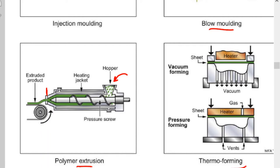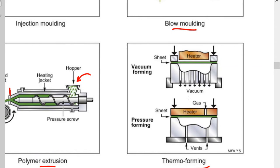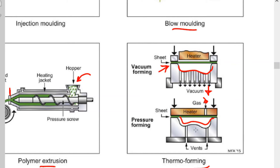In thermoforming, we have two subtypes: vacuum forming and pressure forming. In vacuum forming, we have a polymer sheet. When it is heated and sucked from below, a vacuum is created and the sheet takes the shape of the inner surface of the mold. In pressure forming, high pressure is applied so the sheet moves down and attaches to the surface.